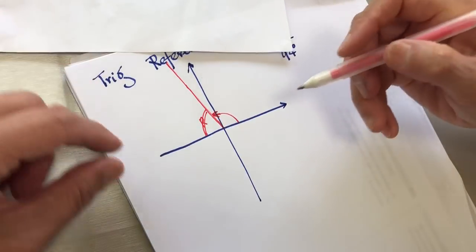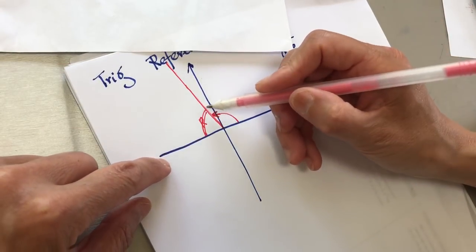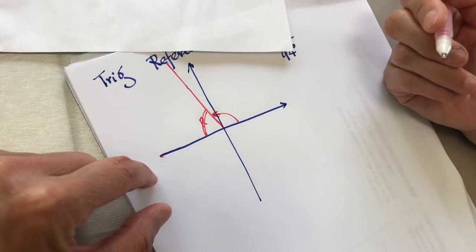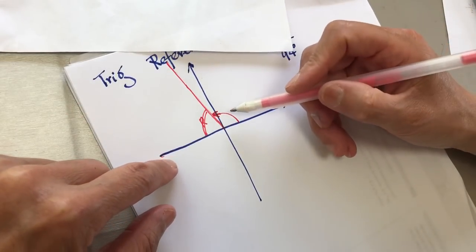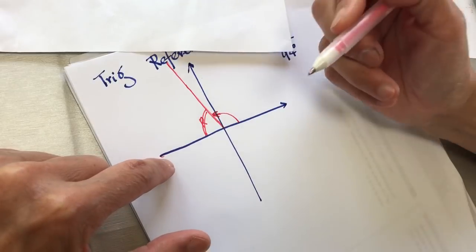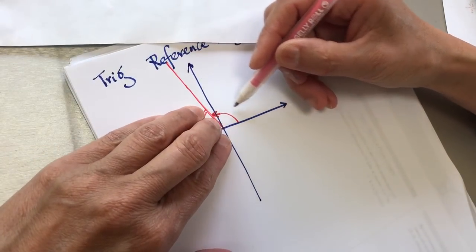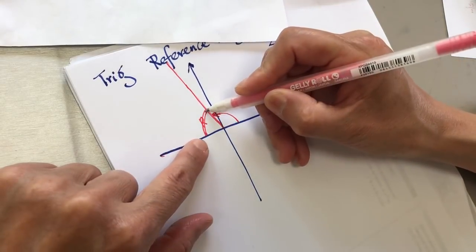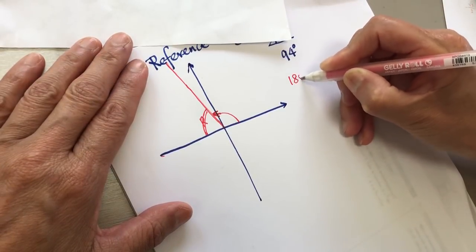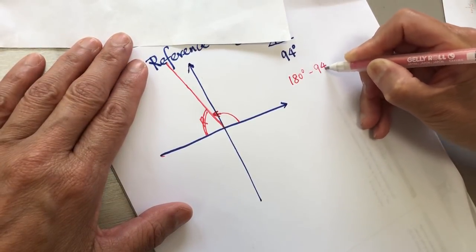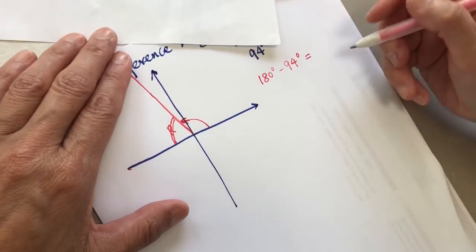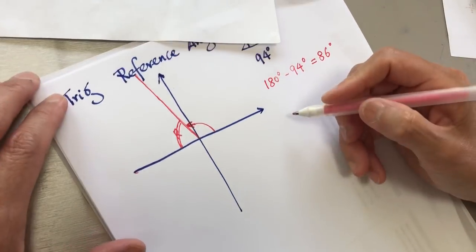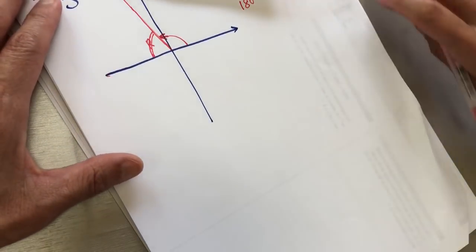The reference angle is the angle that has the opening over the X-axis, but within 90 degrees. So it should be 180 minus 94, which is 86 degrees. So the reference angle is 86 degrees.